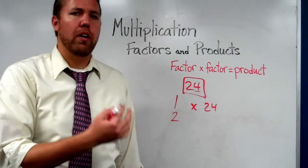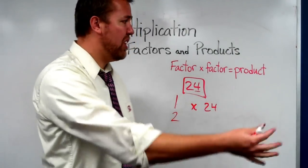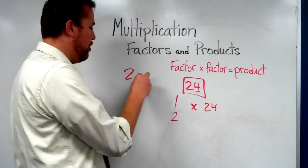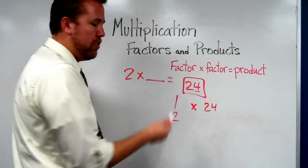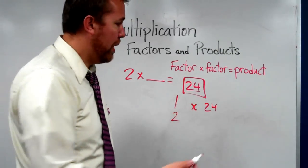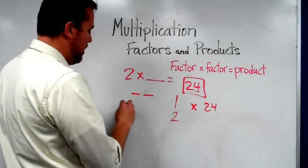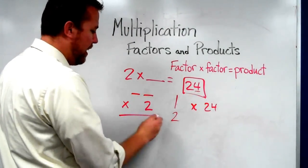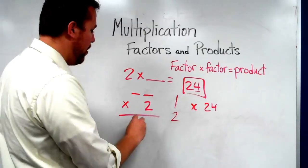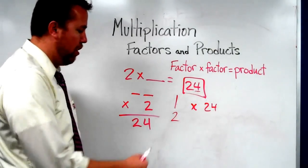So we know that 2 goes into 24. Well, how many times? 2 times what equals 24? A way to do this, if you wish to, is times 2, just make it into a regular multiplication problem, equals 24.